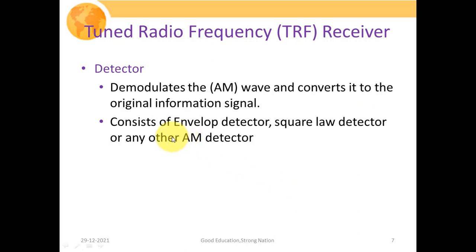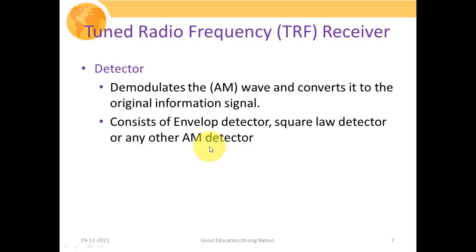The second part is the detector stage. Since we are discussing AM receivers, the detector will comprise any AM demodulator, which converts the signal back to the original information signal. It can consist of any sort of AM demodulator, such as an envelope detector, square law detector, or any other AM detector. If discussing FM receivers, the detector circuitry would be replaced with an FM detector.